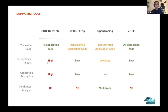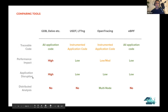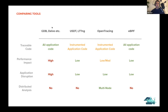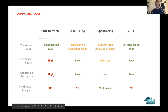We put together a slide comparing all the different options across four metrics: which part of the code is traceable, what is the performance impact, how badly do they disrupt the application, and can you use this for distributed analysis. With GDB and Delve, you can debug pretty much anything — find some arbitrary address in the program, stop it, and print variables — but the performance impact is high, they can disrupt the application, and they only run on a single machine.